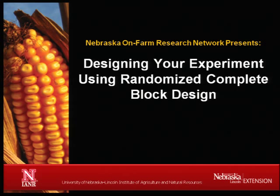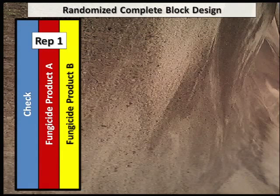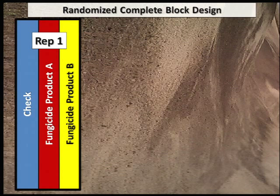The Nebraska On-Farm Research Network presents: Designing Your Experiment Using Randomized Complete Block Design. Let's say you're wondering how two fungicide products compare against each other when applied to corn at V5 growth stage. You've seen two products advertised, one of which has been recommended by your crop consultant or your co-op. You decide to test both products versus an untreated check strip in a field of corn at the V5 stage.